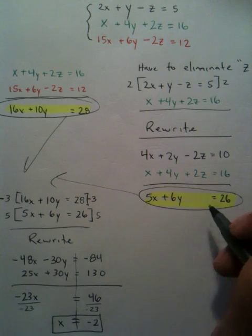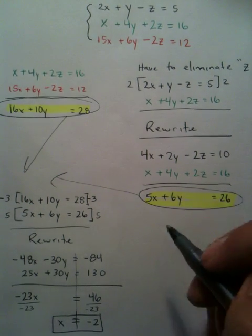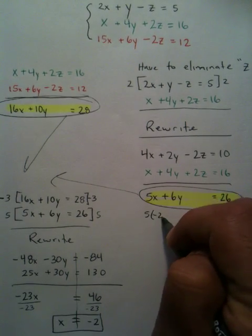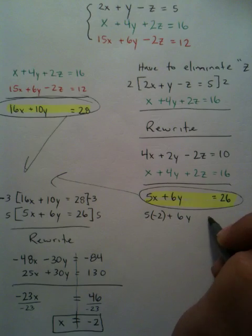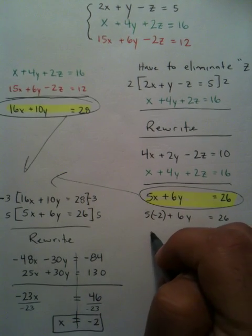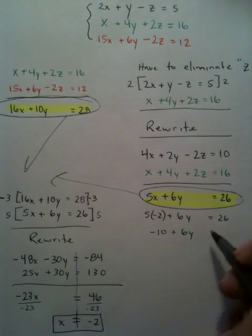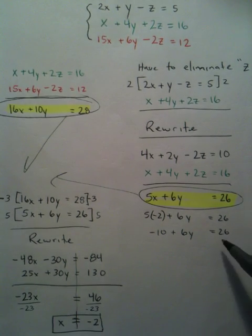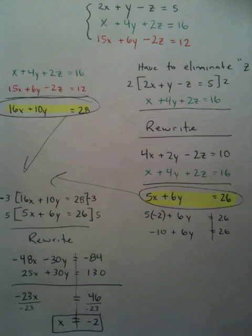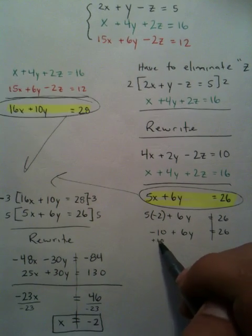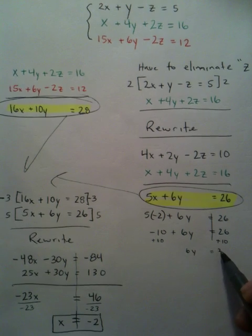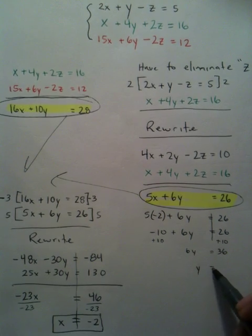5x plus 6y equals 26. I know x is negative 2, so I can say 5 times negative 2 plus 6y equals 26. That's negative 10. Now I just solve the equation—nothing too difficult. Using the inverse operation, I'll add 10 to both sides, so I've got 6y equals 36, and therefore y equals 6.